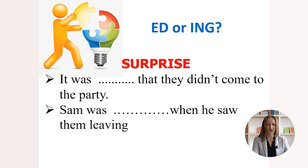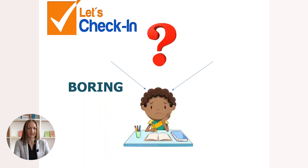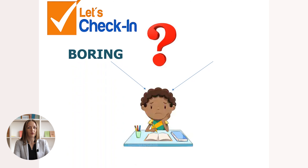Next verb: 'surprise.' Sentences: 'It was ___ that they didn't come to the party' and 'Sam was ___ when he saw them leaving.' Change the verb 'surprise' into the adjectives surprised or surprising. Pause and fill in the gaps. The answers: 'It was surprising that they didn't come to the party' and 'Sam was surprised when he saw them leaving.'